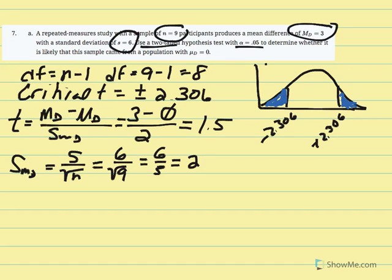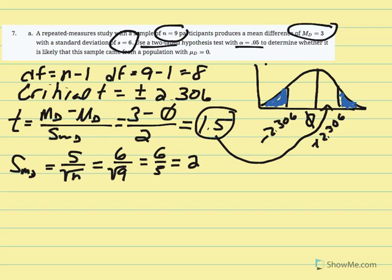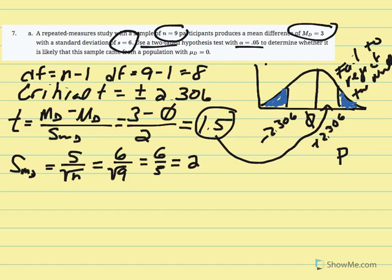Our t value of 1.5 falls within the non-critical region — between negative 2.306 and positive 2.306 — so we fail to reject the null. The probability of obtaining a t value of 1.5 is greater than our alpha of 0.05.